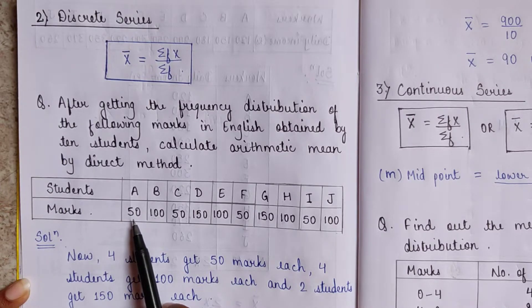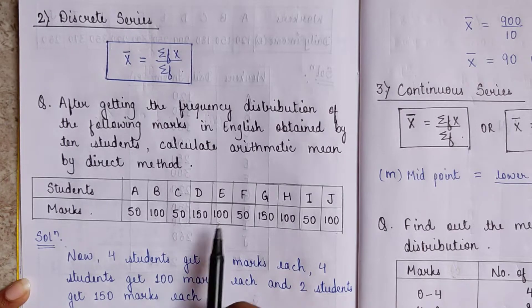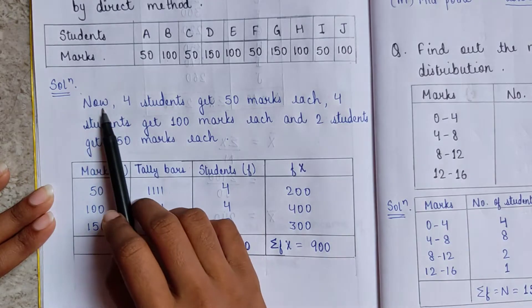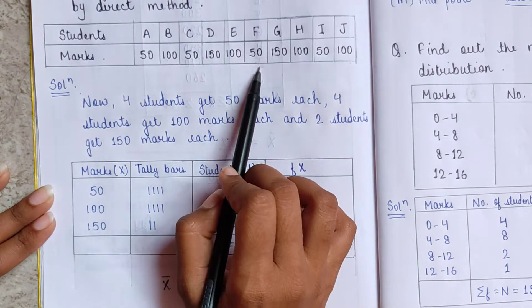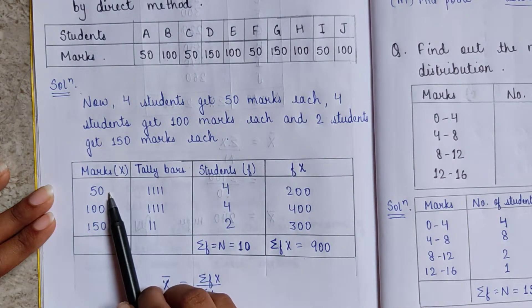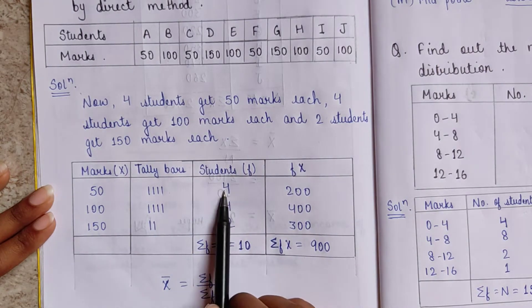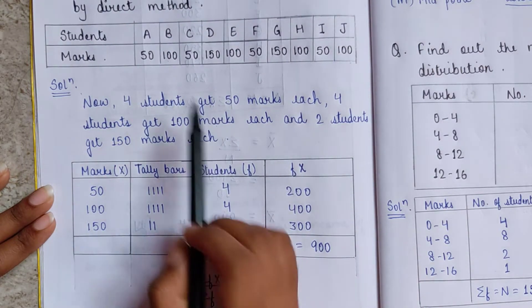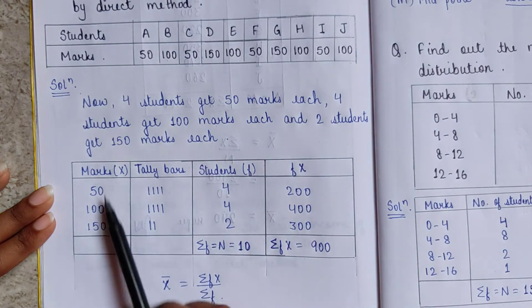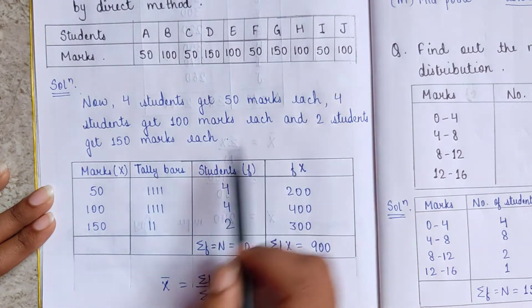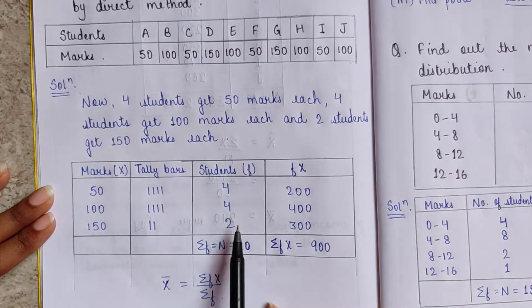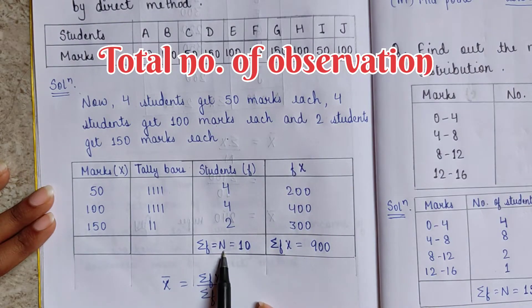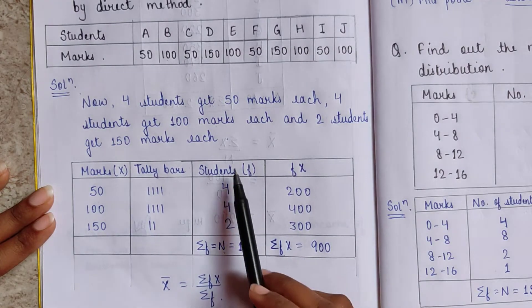Looking at the data: 4 students got 50 marks (students A, C, F, and I), so frequency for 50 is 4. Then 4 students got 100 marks, so frequency for 100 is 4. And 2 students got 150 marks, so frequency for 150 is 2. Adding the frequencies: ΣF = 10, which equals N, the total number of observations.